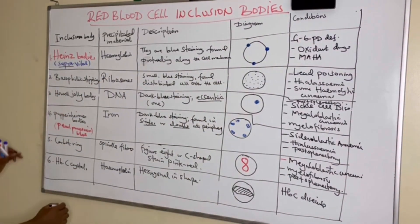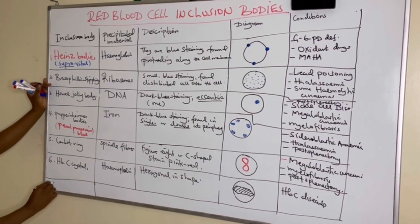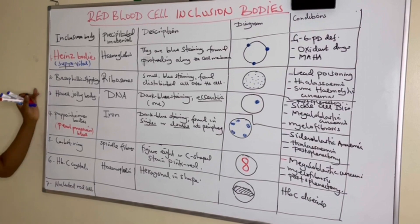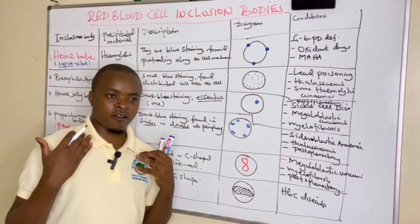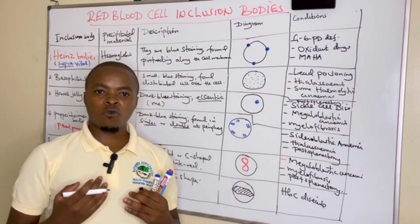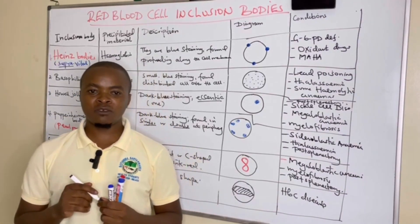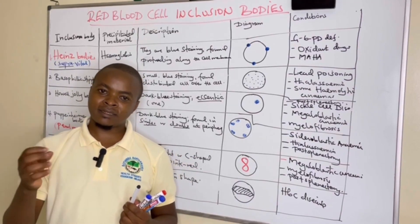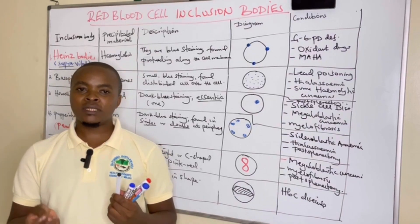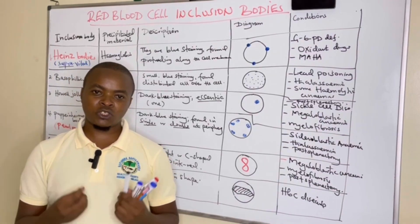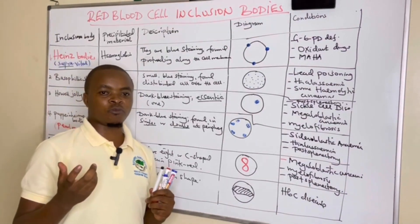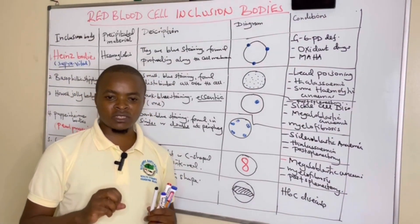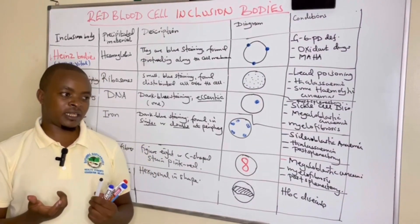The last inclusion body in this session is nucleated red cells — also called NRBCs. These are found in hemolytic anemias when there is increased destruction of red cells or acute hemorrhage, where the body demands more cells and sends out immature ones as a rescue mechanism.